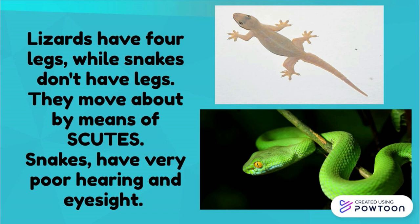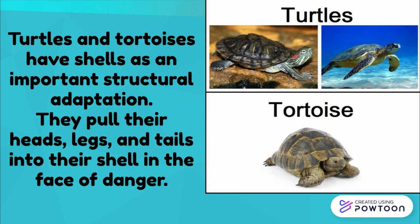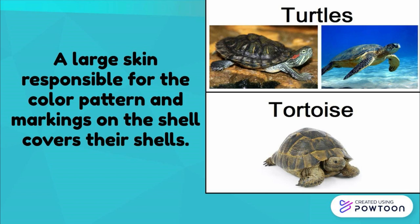Lizards have four legs while snakes don't have legs — they move by means of scutes. Snakes have very poor hearing and eyesight but are equipped with a keen sense of smell and taste. They use their tongues to locate prey and gather information about the environment. Turtles and tortoises have shells as an important structural adaptation. They pull their heads, legs, and tails into their shell in the face of danger. A large skin layer responsible for the color pattern and markings covers their shells.